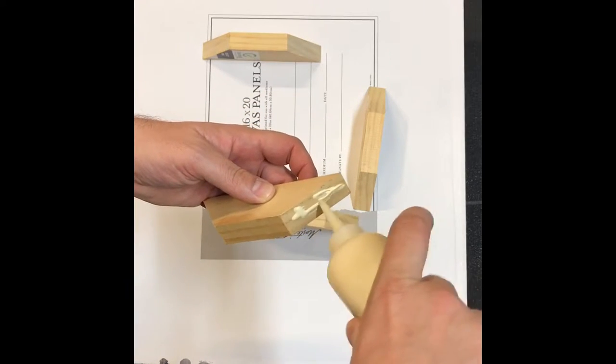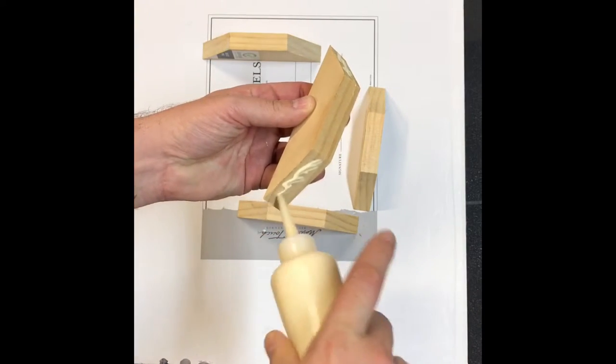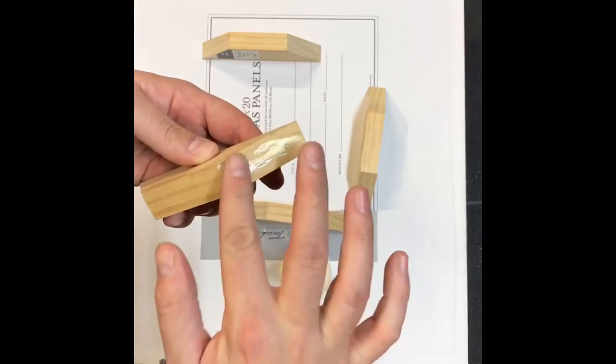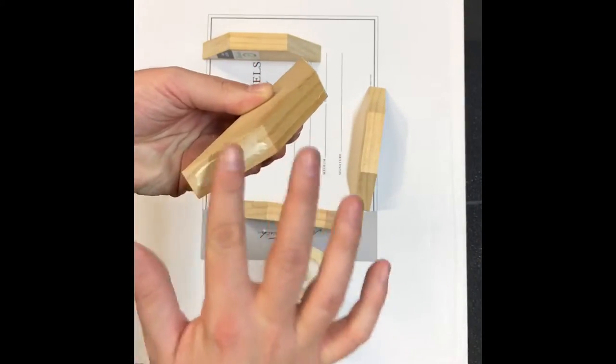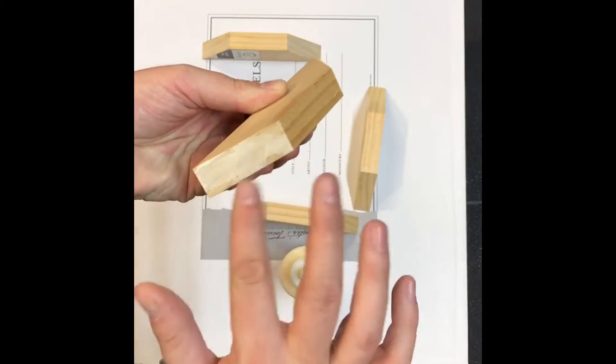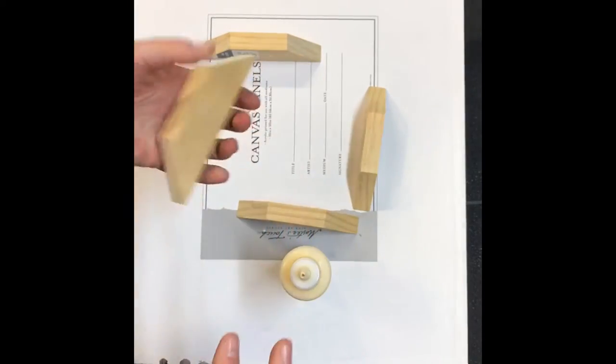And we're going to repeat this for all four pieces. Make sure you got a nice glue surface there. There's two pieces, two more to go.